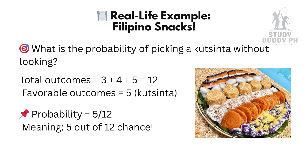What is the probability of picking a kutsinta without looking? Total outcomes: 3 plus 4 plus 5 equals 12. The event we want — picking a kutsinta — equals 5 kutsinta. So the probability is P equals 5 over 12. Meaning, in 12 possible picks, 5 of them are kutsinta.